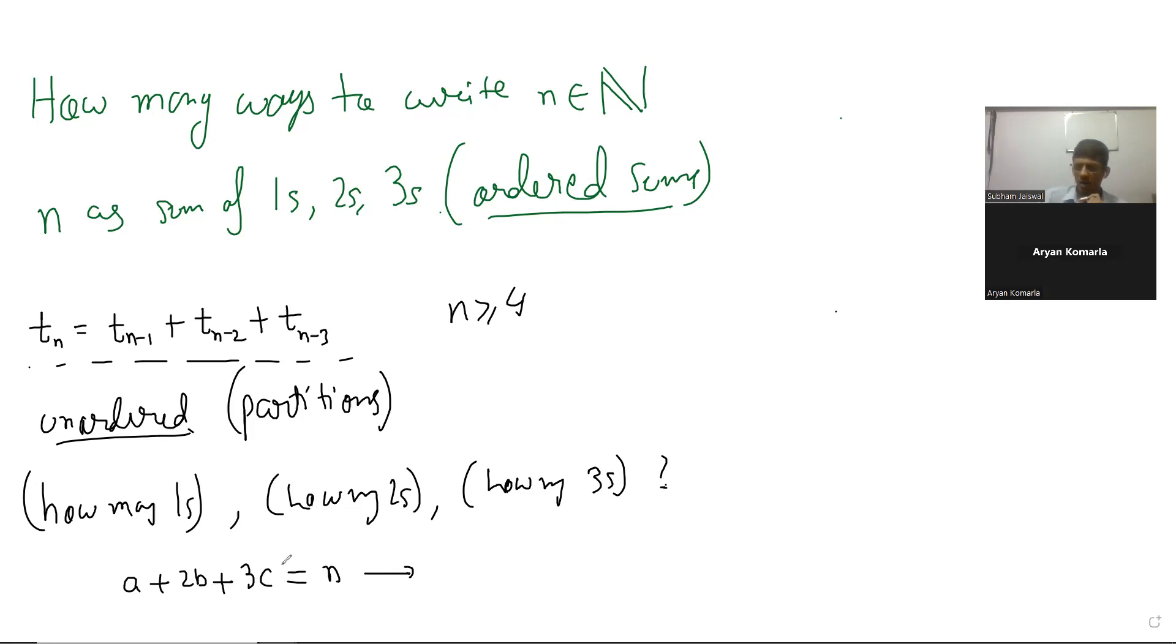Now these k, a, b are unordered. For this, you can think of some polynomials. You can express this in terms of coefficients of some polynomial. Let's call this q_n. Think about expressing this in terms of polynomial coefficients.